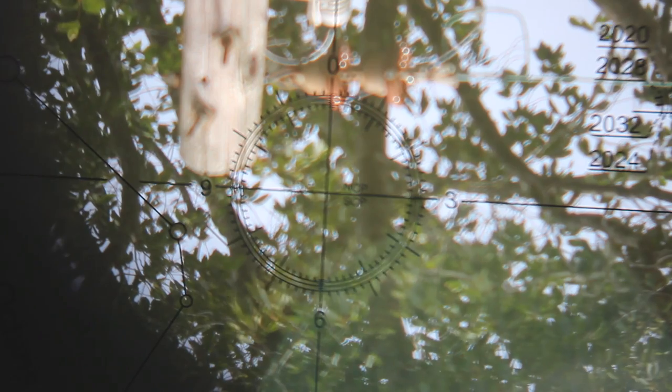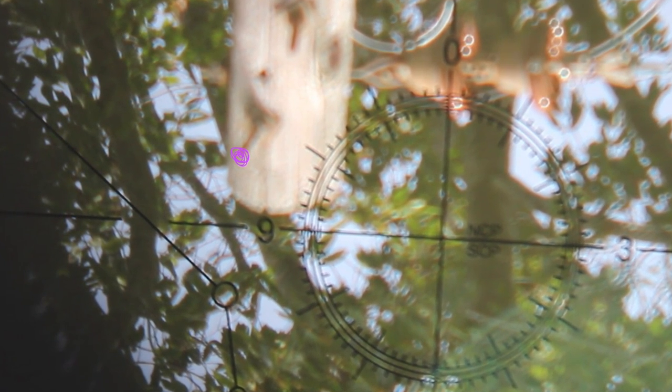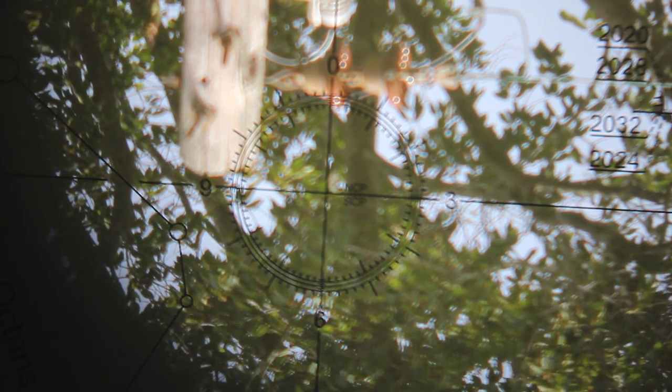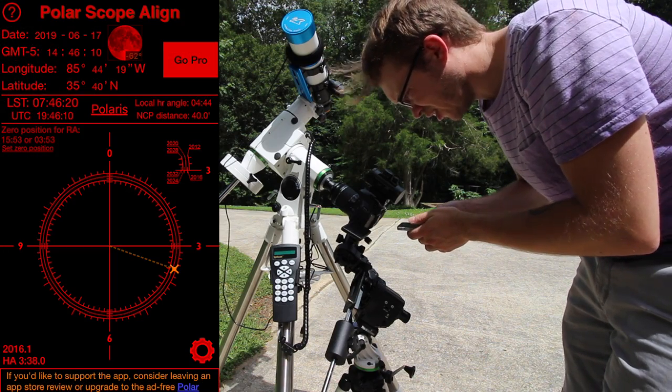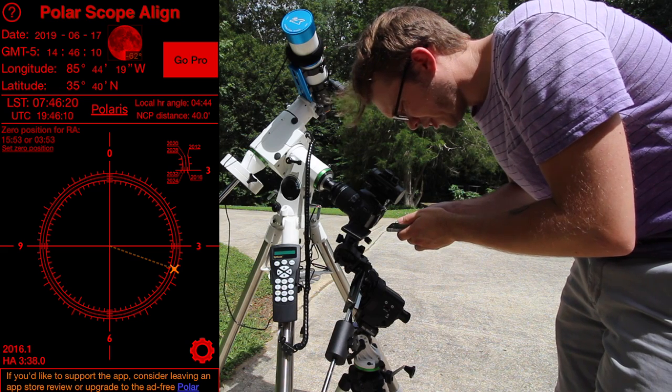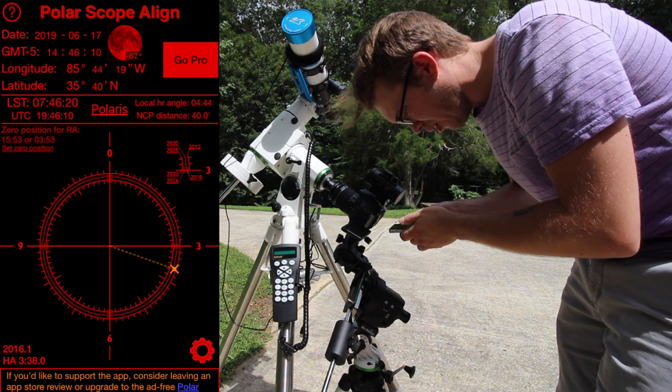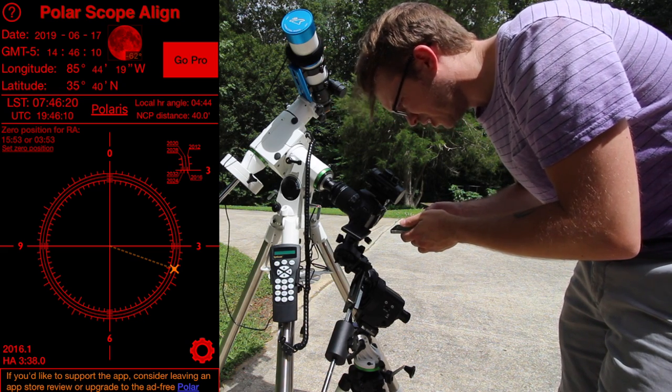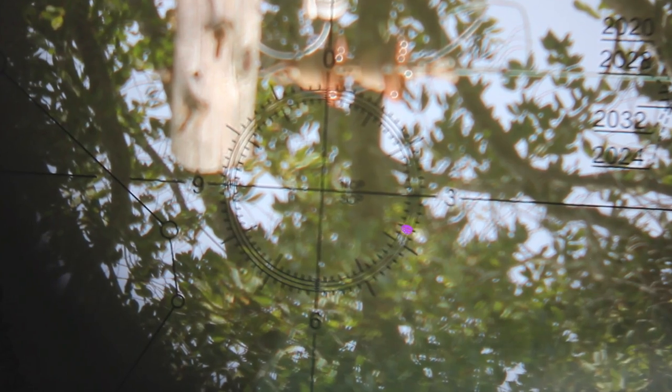We're going to say that the tip of that bolt right there, close to the nine o'clock position, is Polaris. So we're going to polar align around that. When we pull out our polar scope alignment app and take a look at it, you'll see that Polaris is supposed to be roughly in the four o'clock position. So we need to get Polaris in roughly the four o'clock position inside of our polar scope.